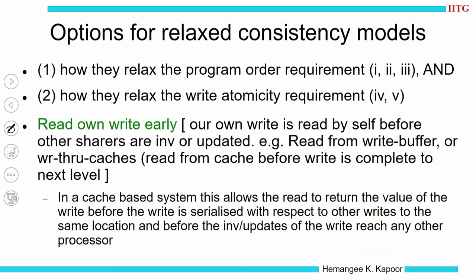Overall we have five things to consider. When we say read own write early, it means the same process reads the value it has changed before the invalidations or updates have percolated in the system. When I do the write, that write went into the write buffer or through write-through caches. Because I have done the write, it is close to me — can't I access it? So that is my demand: let me read my own write earlier than others. Read from the cache before the write completes across the system.